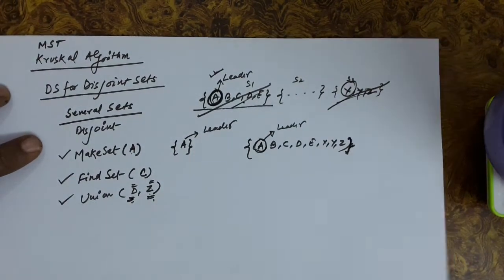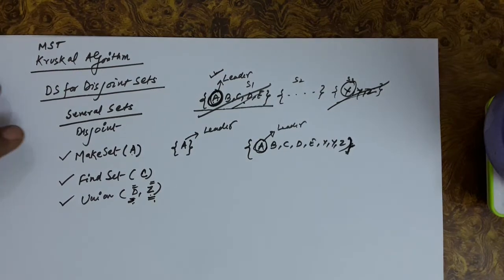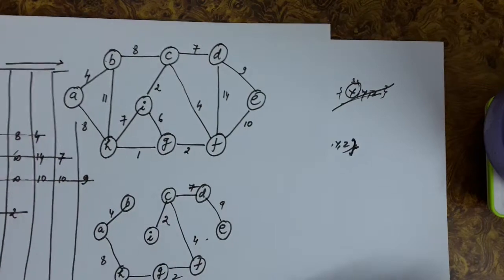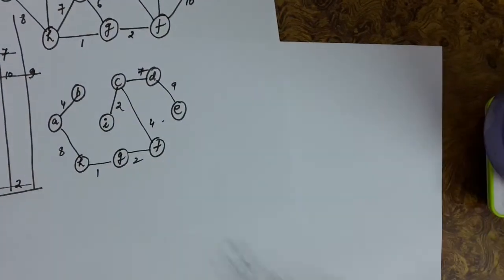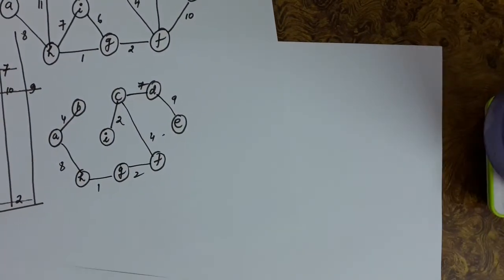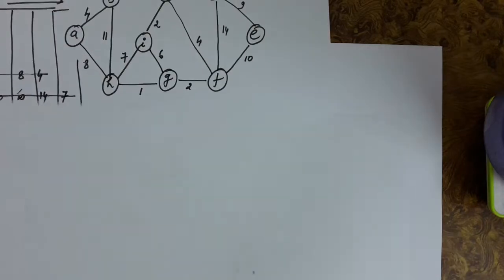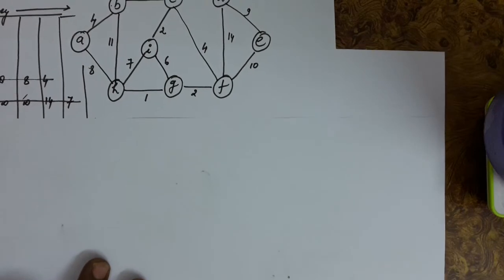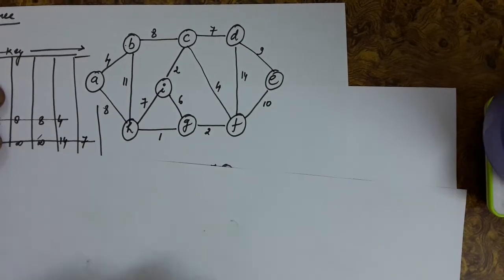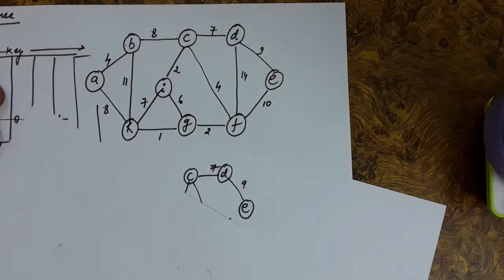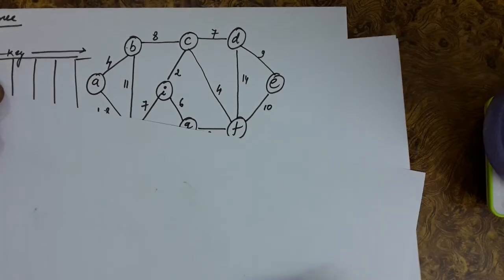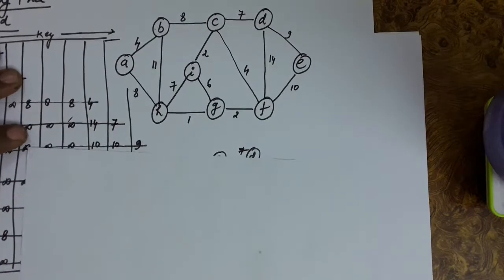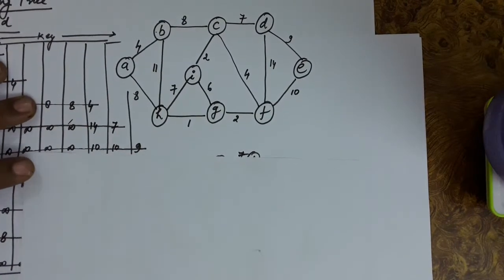We will utilize this disjoint set concept in the Kruskal algorithm. Given a graph, to implement the Kruskal algorithm, we first list out all the edges of the graph and sort them according to their weights.